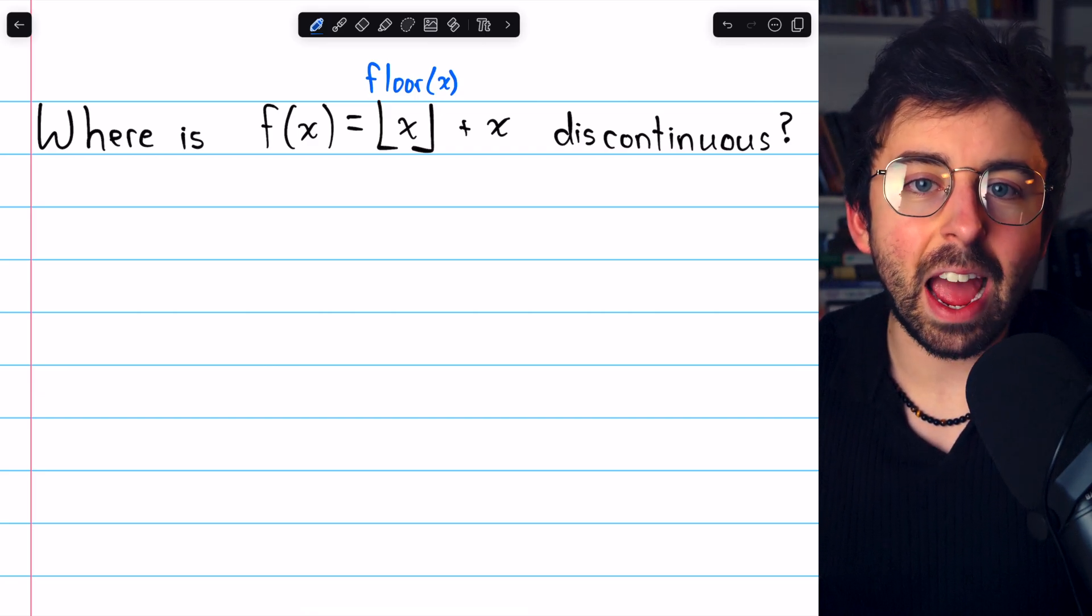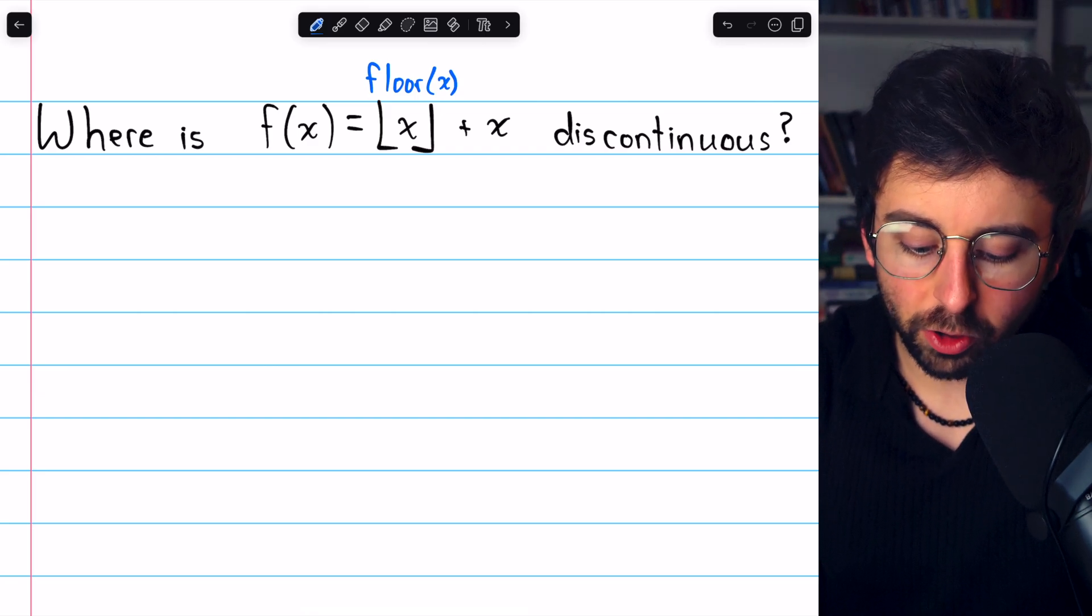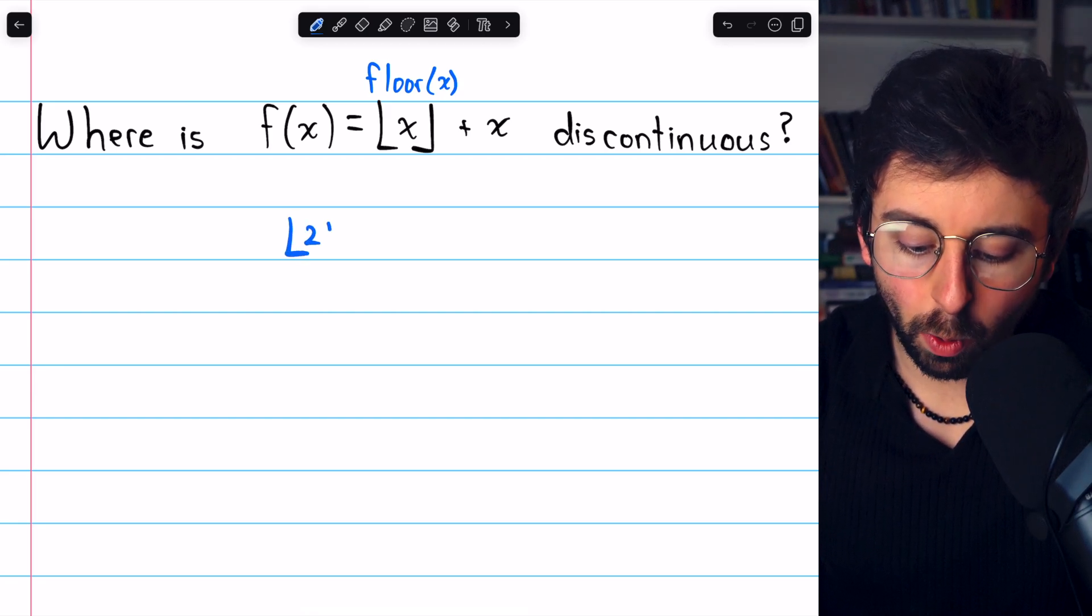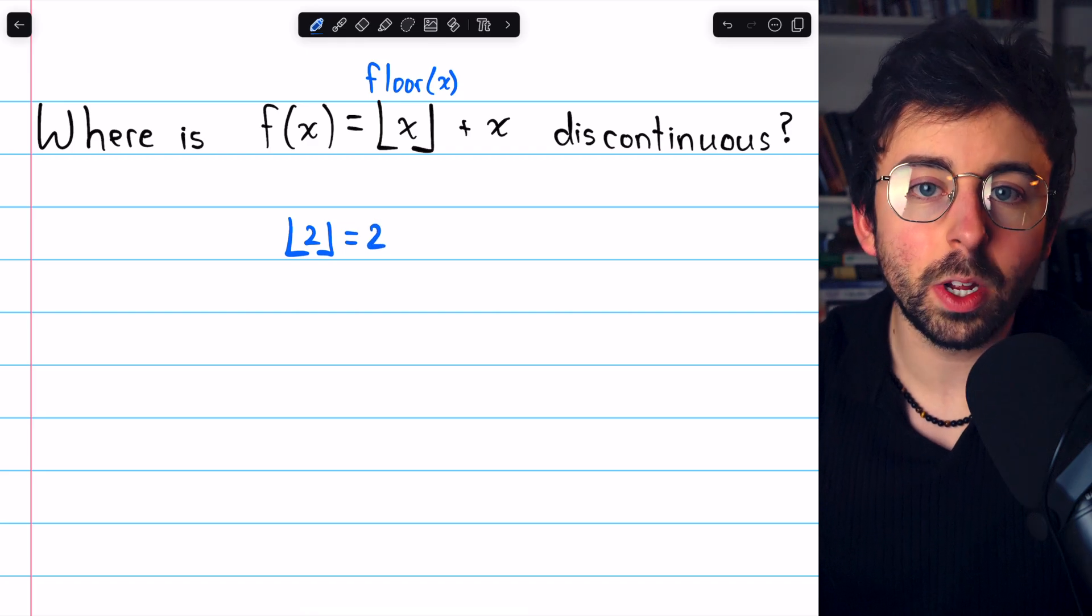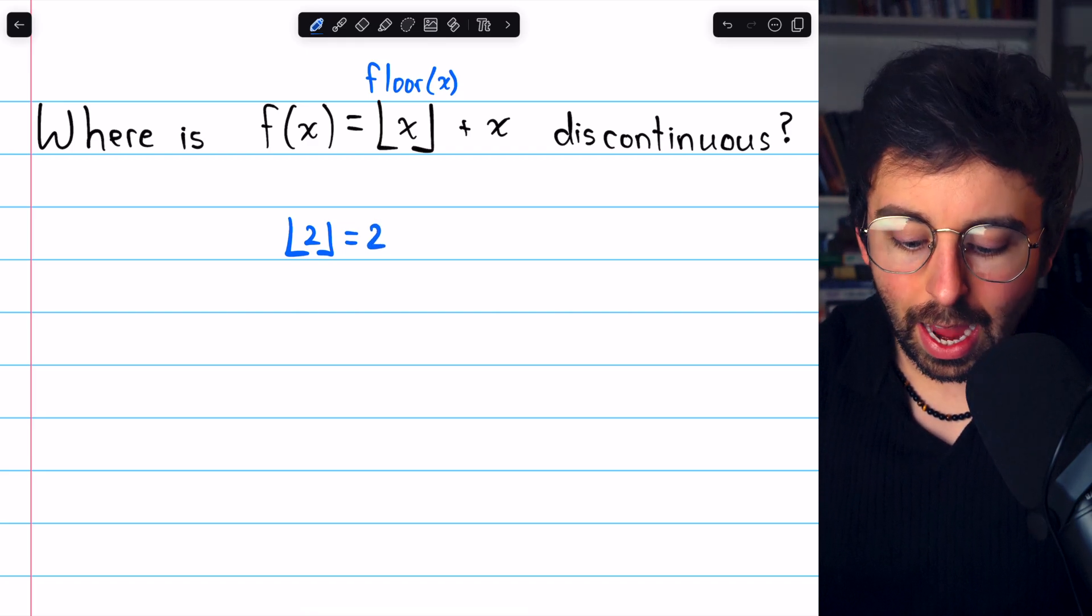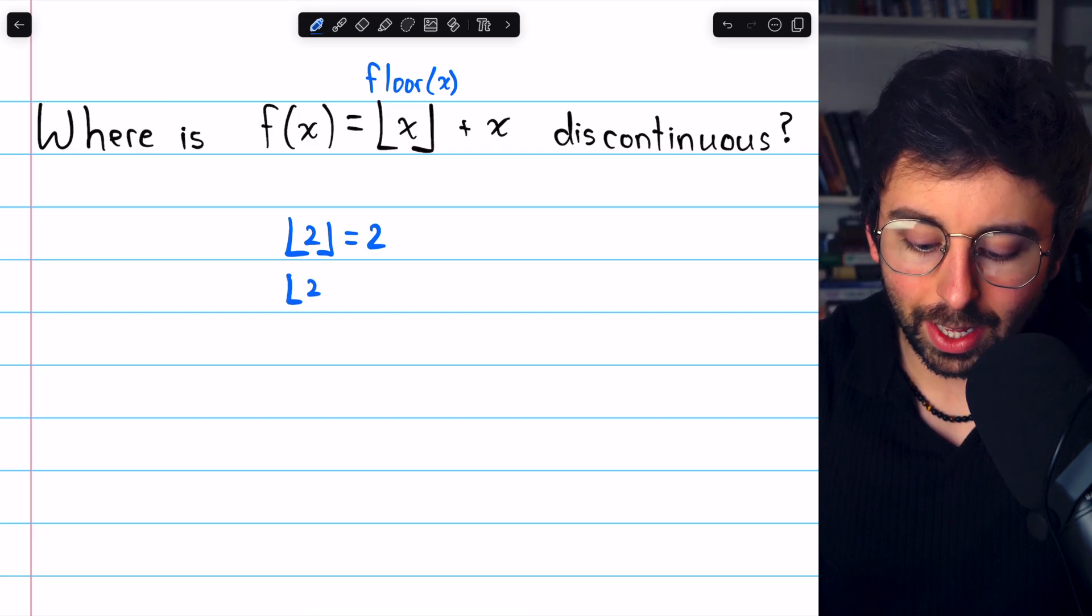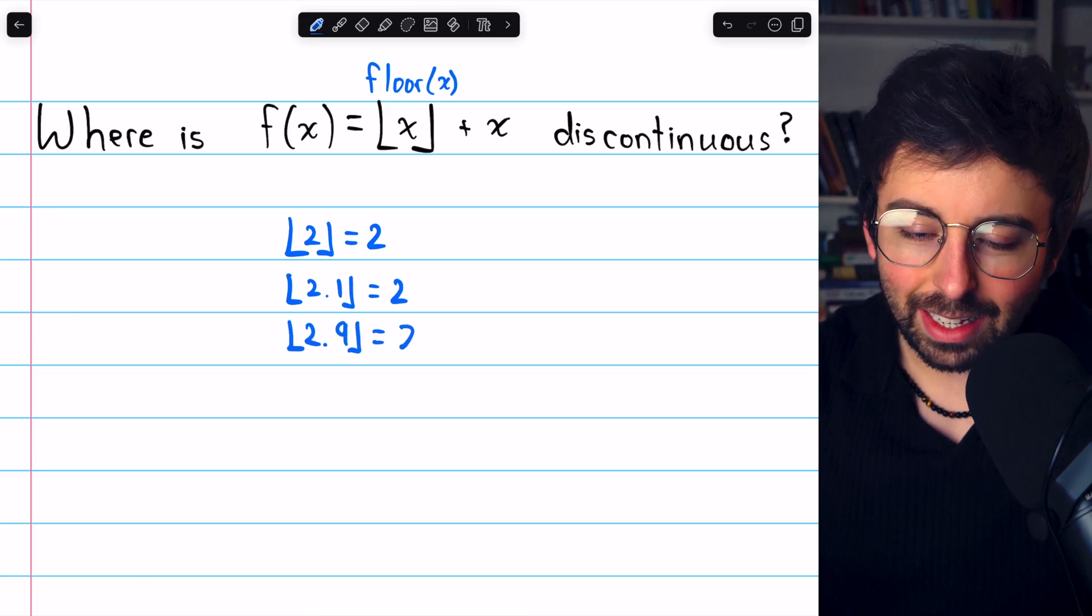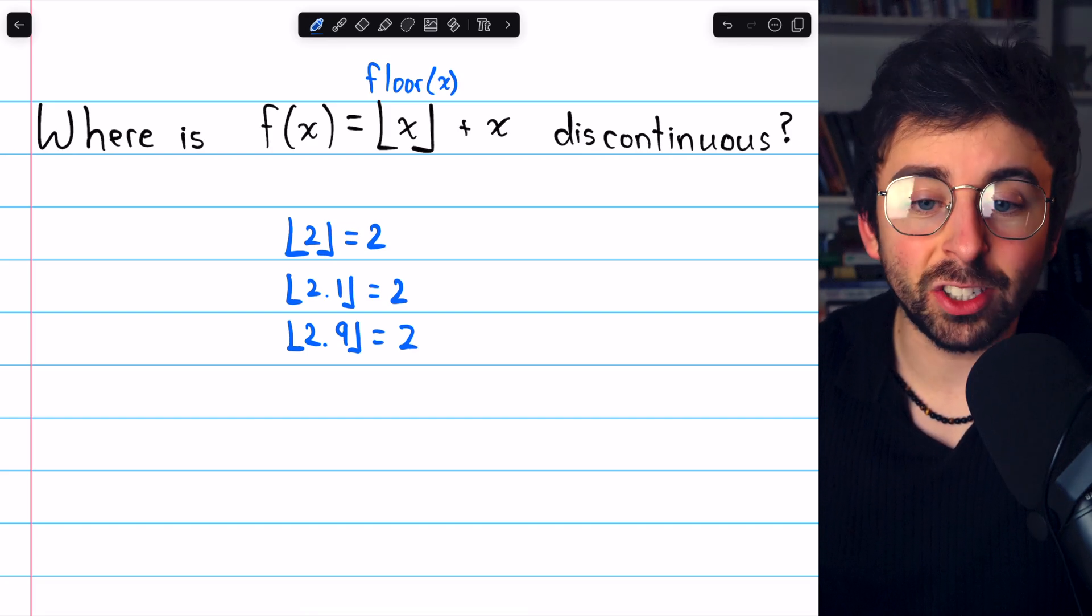Because of this rounding down behavior, the floor function has discontinuities at every integer. The floor of 2 is just 2 because the greatest integer less than or equal to 2 is 2. And if you increase the input a little bit, like 2.1, it's still going to be rounded down to 2. Even as you increase the input all the way to 2.9, it still gets rounded down to 2.